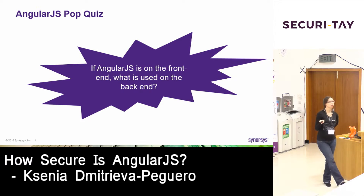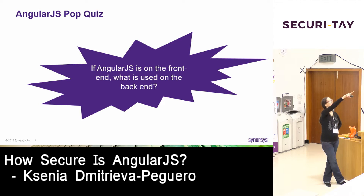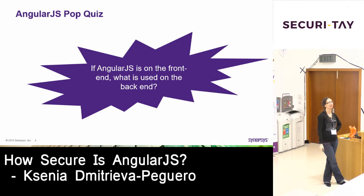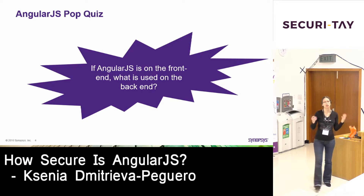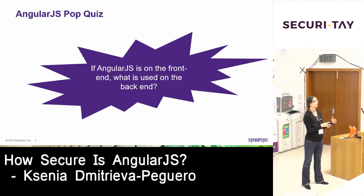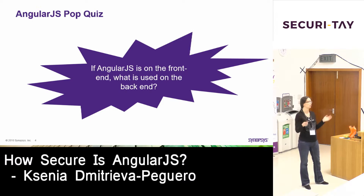If AngularJS is on the front-end, what do we have on the back-end? Node.js — but you can have whatever: Java, PHP, Python, or even be serverless with Lambda on the back-end. It doesn't matter because it's front-end. As long as whatever is on your server side is talking web services — a REST API — that's all you need.